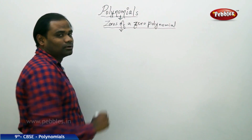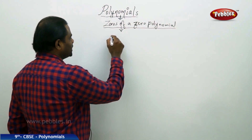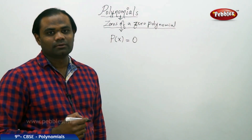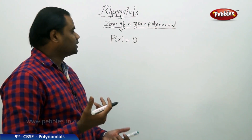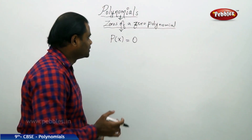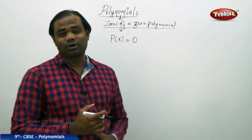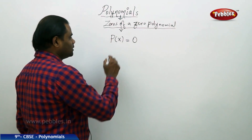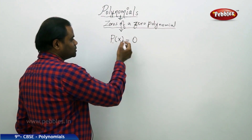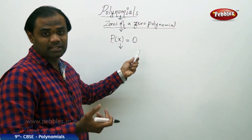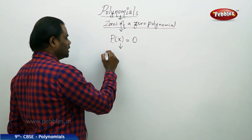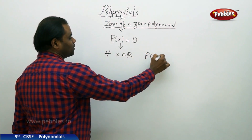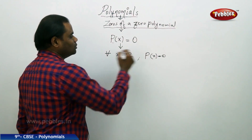Let's revisit the zero polynomial, which we defined as a polynomial whose constant value is zero. For this zero polynomial I need to find the zeros. The definition says zeros are the values of x for which p of x equals zero. Since the zero polynomial is p of x equal to zero itself, all x belonging to real numbers satisfy this condition.